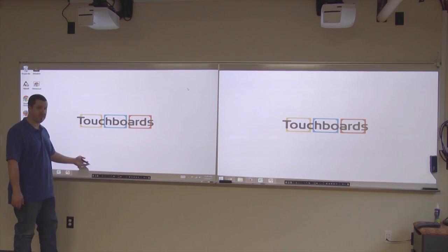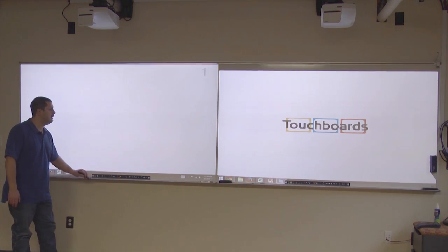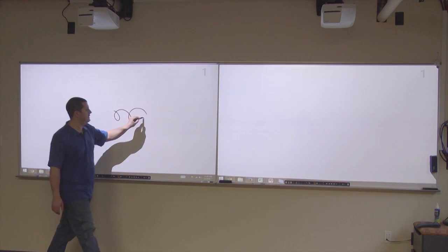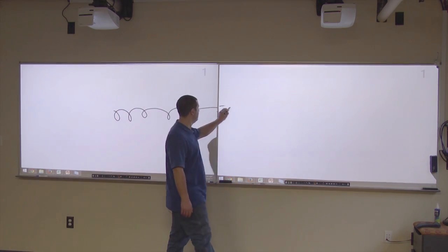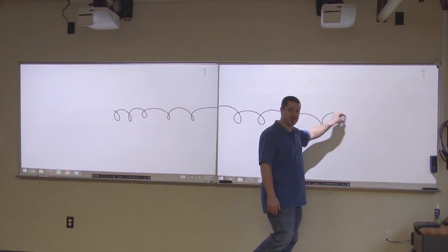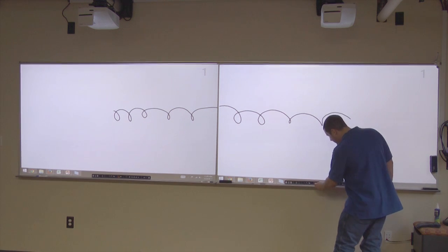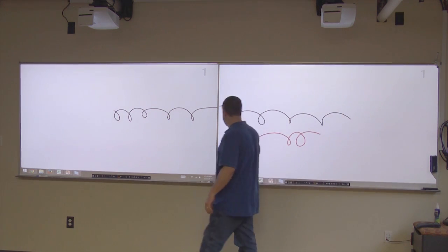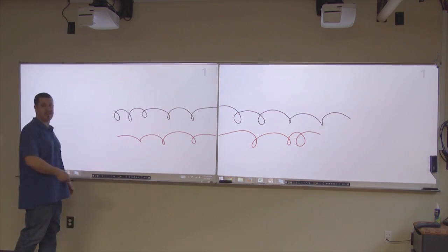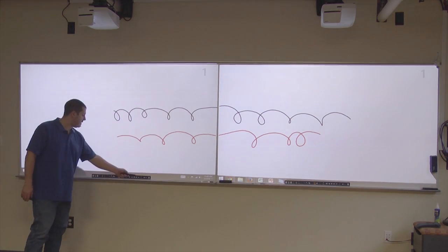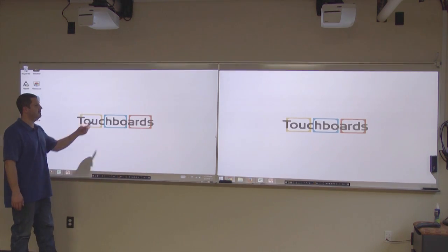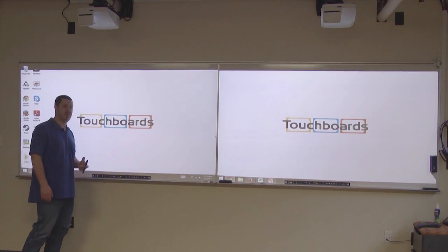So I can be over here and go into whiteboard mode, and both boards go into whiteboard mode. I can draw and just cross over the divider onto the second board. If I change colors, it's going to happen on both sides. So I'm going to write in red, cross over, and still be writing in red. I want to clear all. It clears all from both. Go back to desktop. We're back live desktop on both sides.